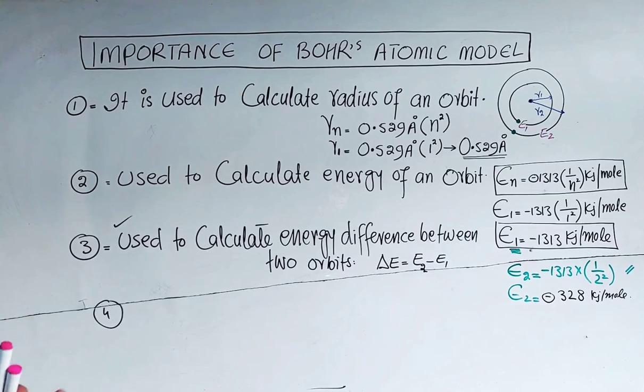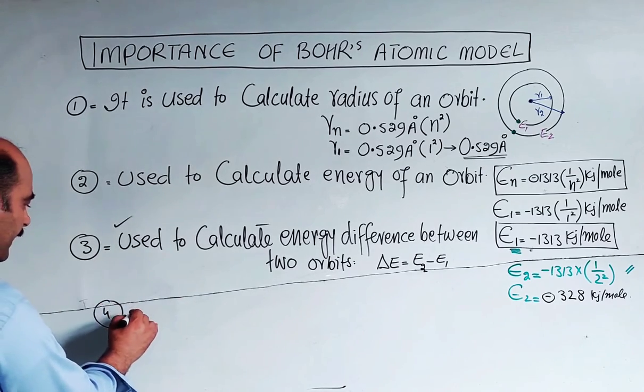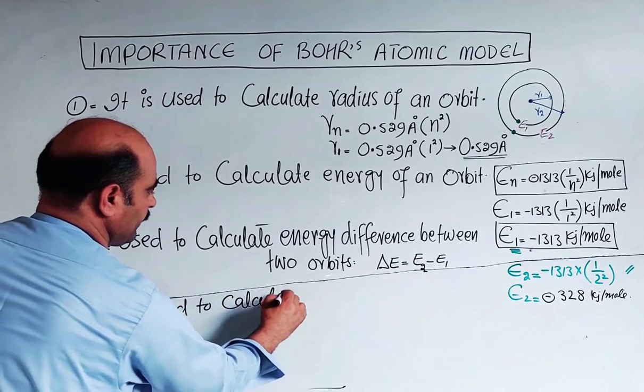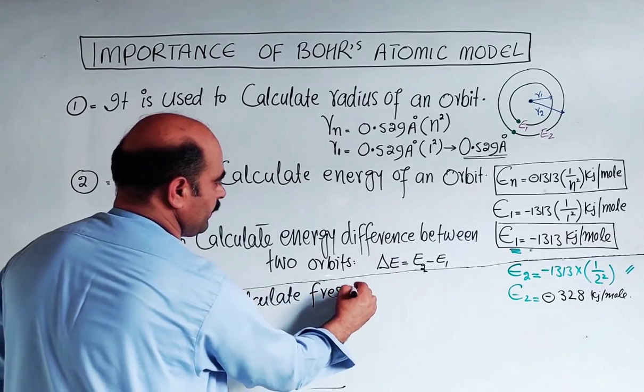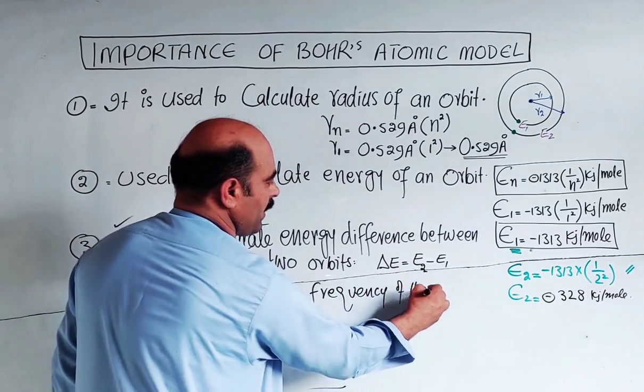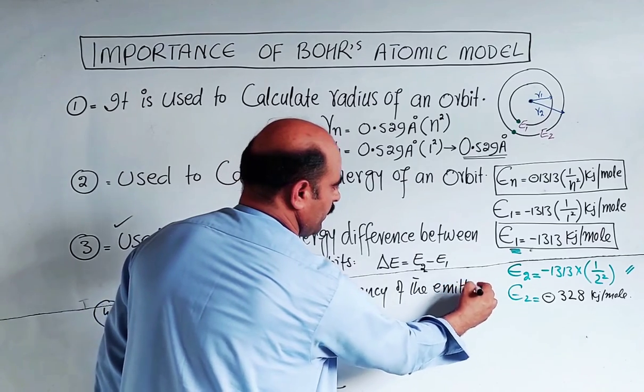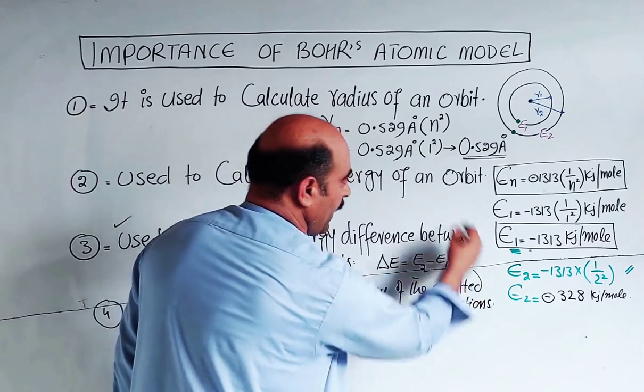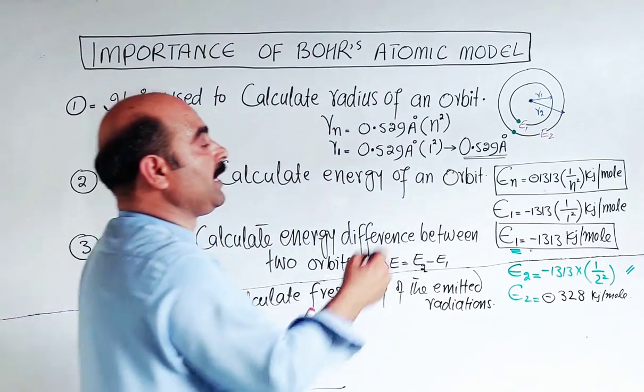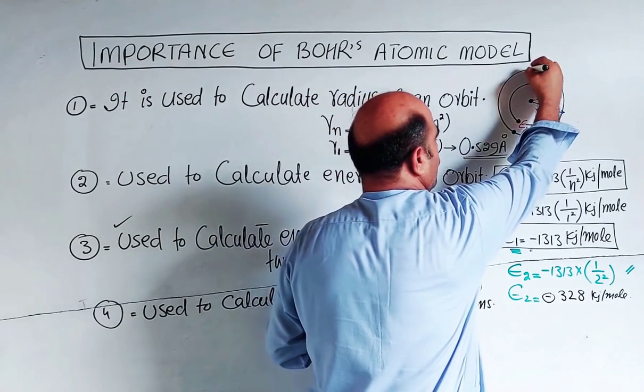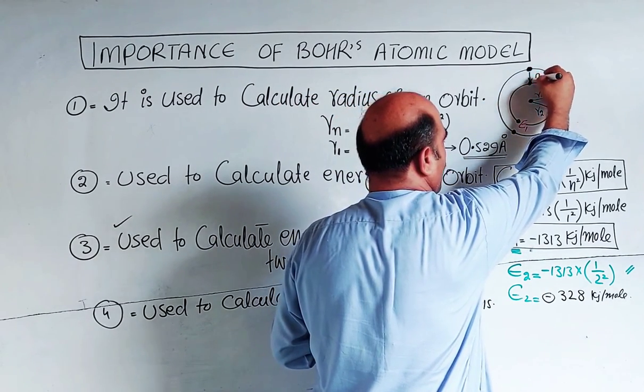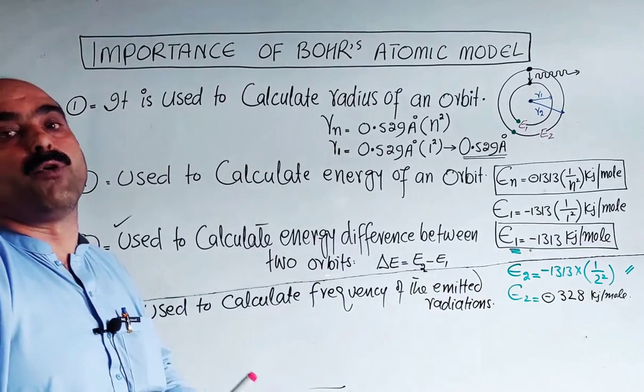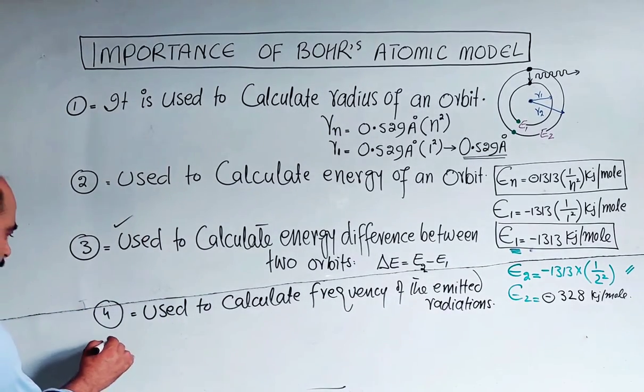Number four: Bohr's atomic model is used to calculate frequency of the emitted radiation. When an electron jumps from high energy level to low energy level, it loses energy in the form of radiation. We can calculate that radiation's frequency with the help of Bohr's atomic model.